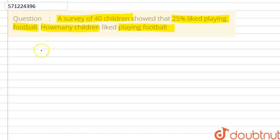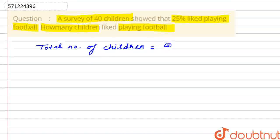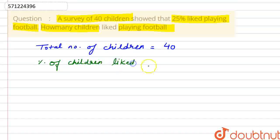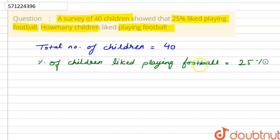Here we know that the total number of children is given to us as 40, because the survey was carried out for only 40 children. And it is given that the percentage of children that liked playing football is 25%.